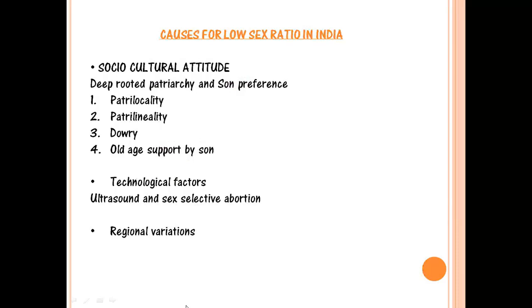Third is dowry — it is a kind of extra cost attached with a girl child. As soon as a girl is born, there is increased pressure on the parents about how they will manage the dowry for her marriage, making sons more preferred. Lastly, there is old-age support by the son: since the old-age support system in India is not well developed and the son is culturally expected to care for his aged parents, sons are also preferred for this reason.